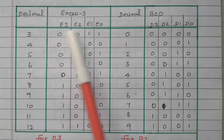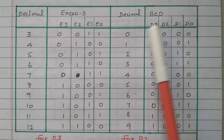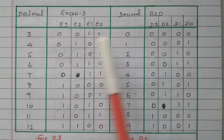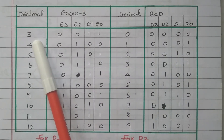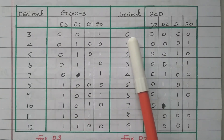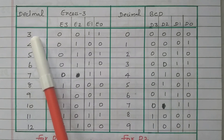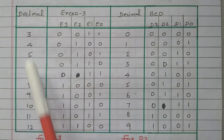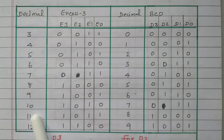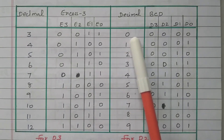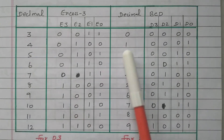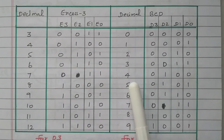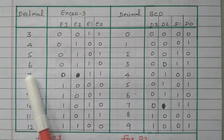Let's see what XS3 and BCD are. First we will see in reverse order: from BCD, if we add 3, we get XS3. XS3 means adding 3. From 0, if we add 3, we get XS3 decimal 3. From 1 plus 3 we get 4, from 2 plus 3 we get 5. That is the process to convert BCD to XS3.